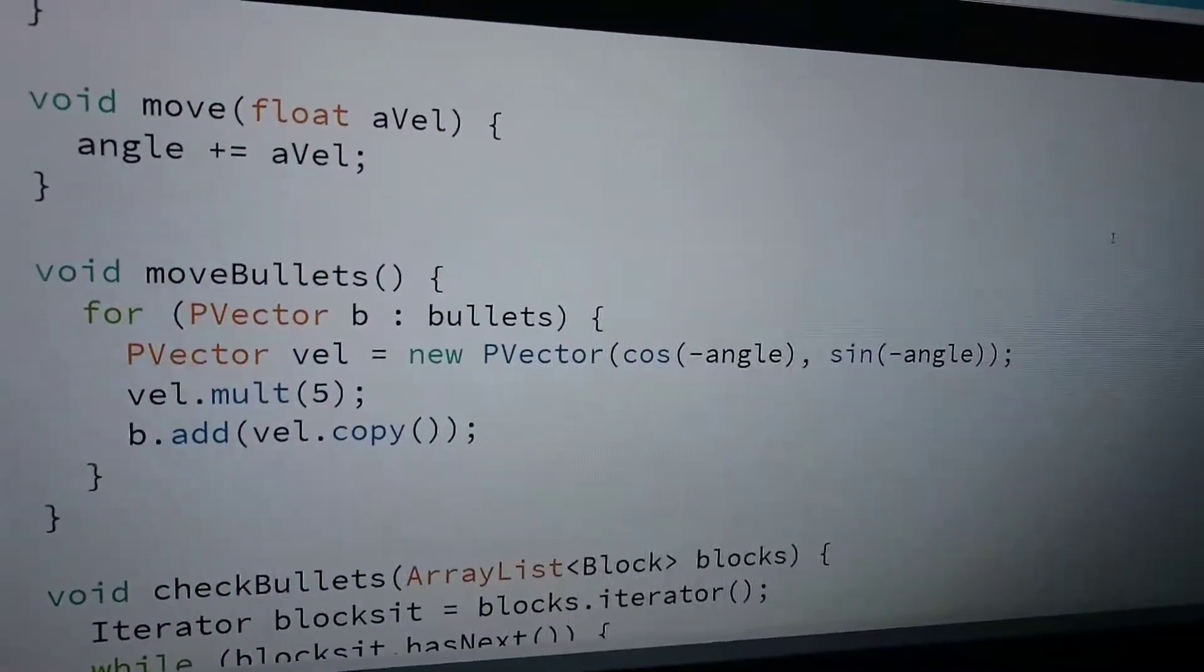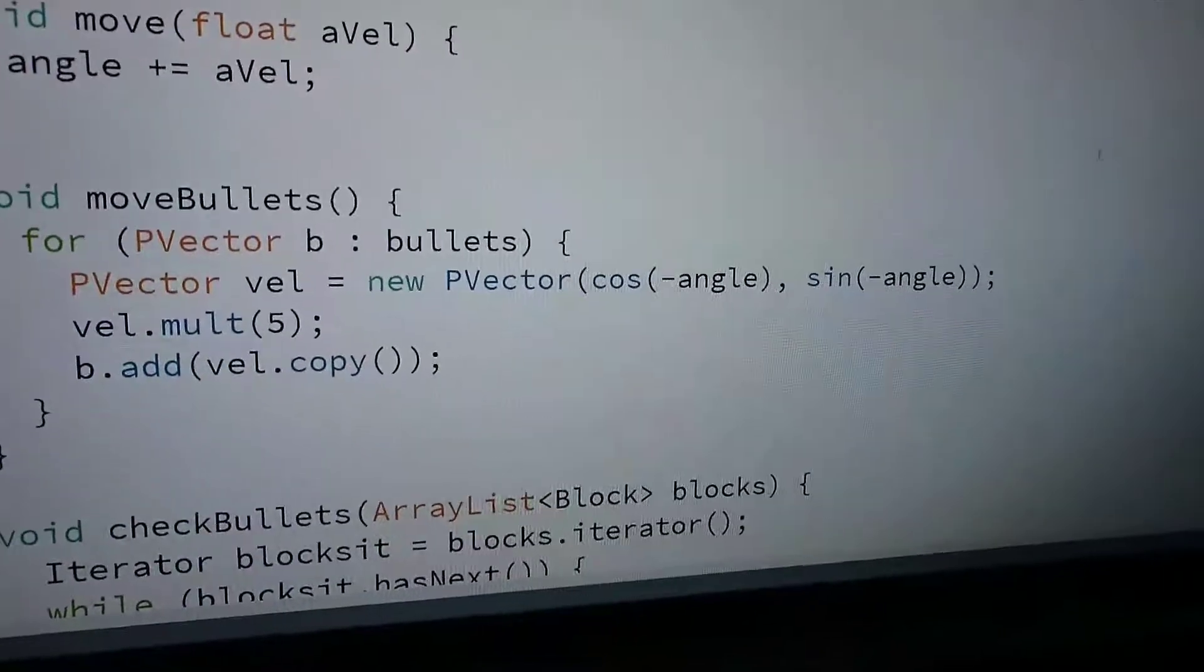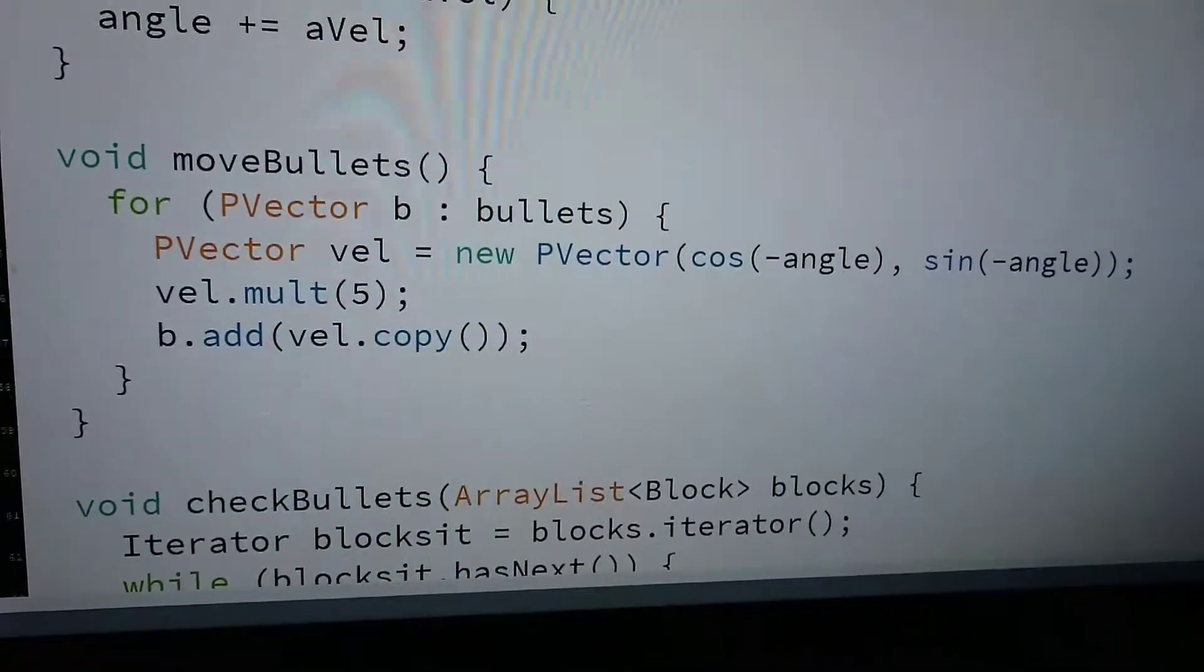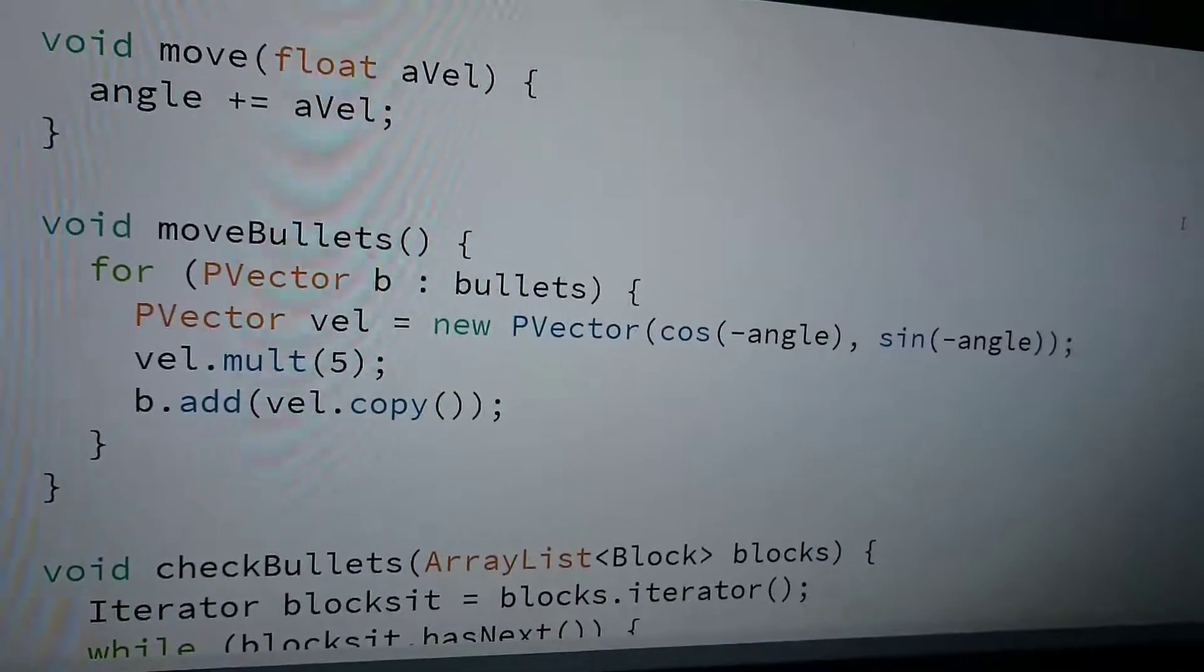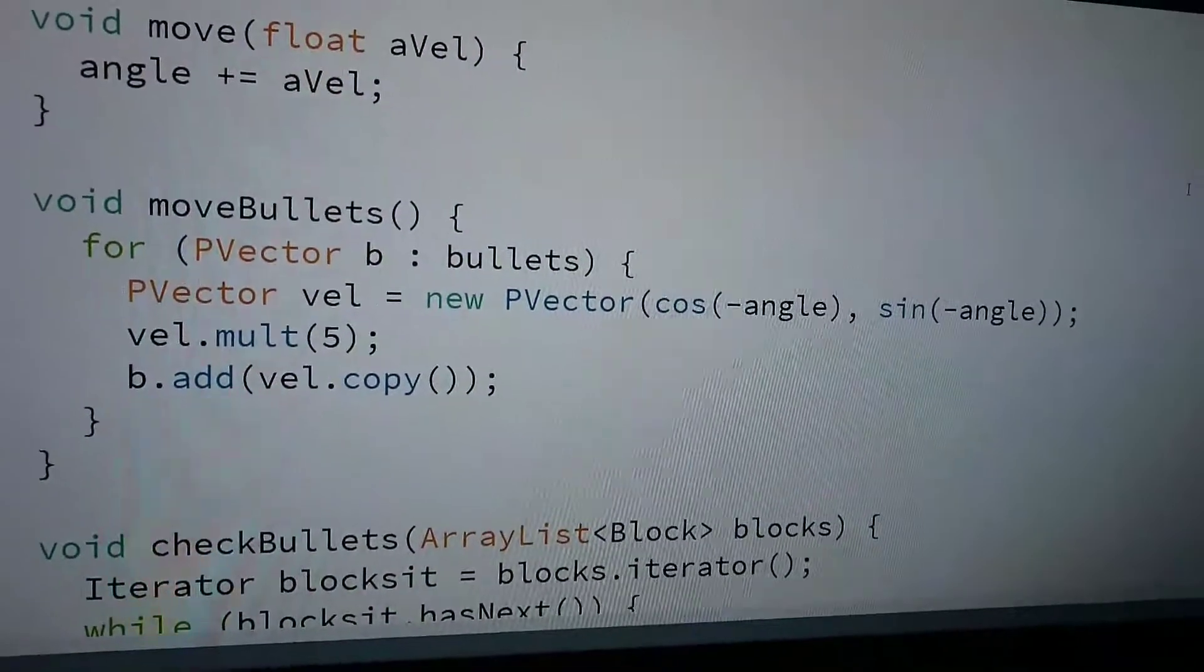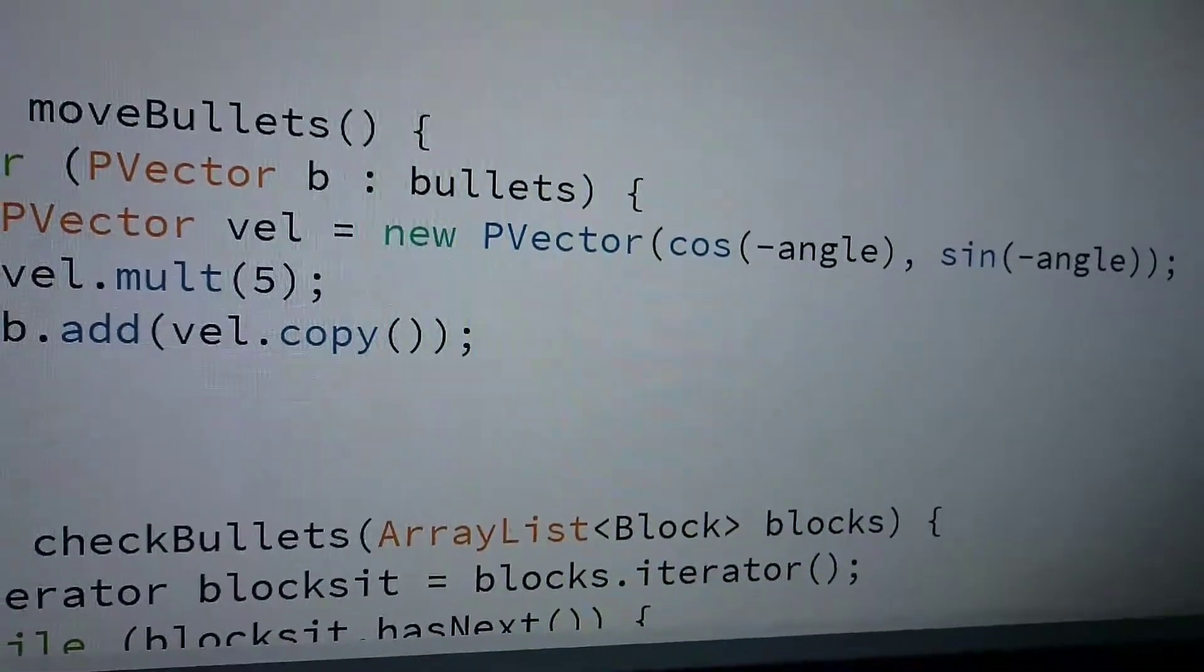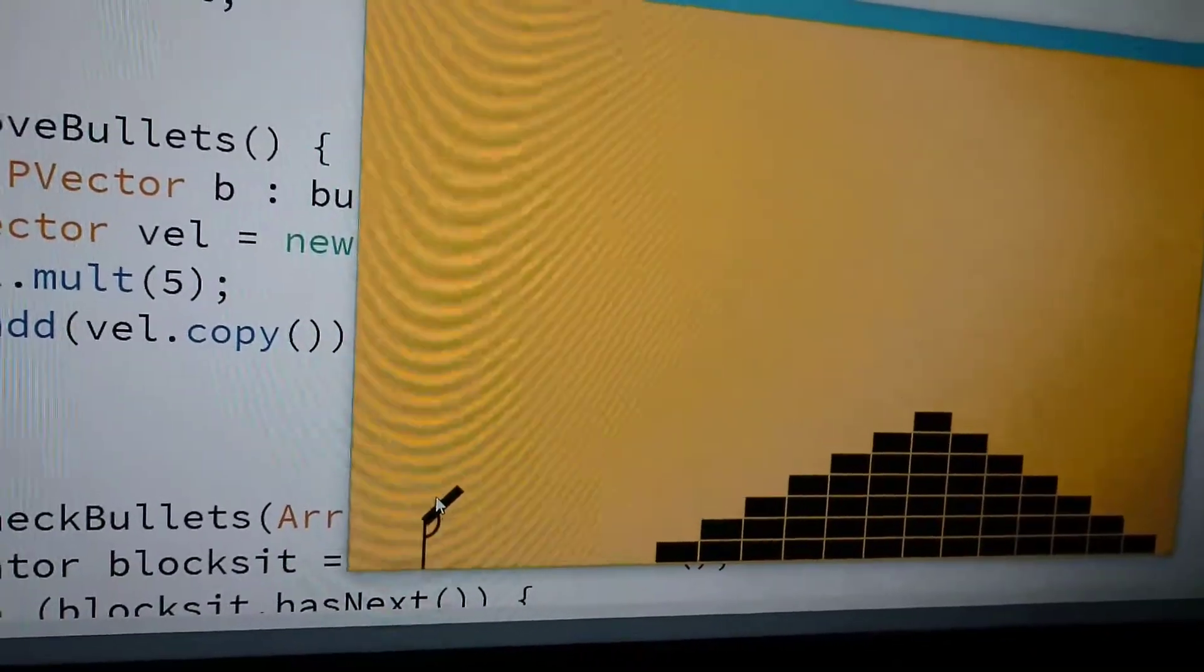So, you are the velocity, the new P vector. Here. See, I'm so sick. Which angle, right? Yeah. Angle. It's actually negative angle. Because the thing is actually pointing at negative angle.